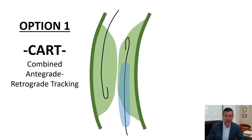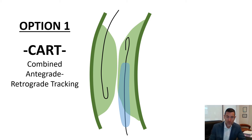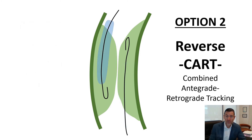If you don't succeed from a simple retrograde puncture, there are four options to consider. The first is the CART technique — combined antegrade retrograde tracking — where a balloon is inflated from the distal retrograde access to create a space for re-entry from above, joining the two wires assisted by the balloon. This can also be done in reverse, called reverse CART, where the only difference is the balloon is inflated from above.